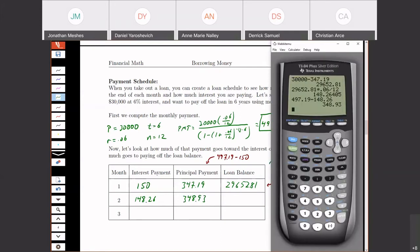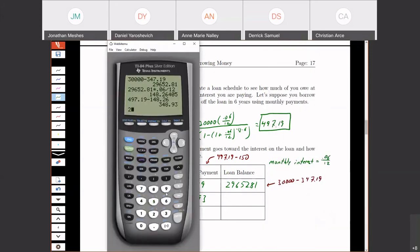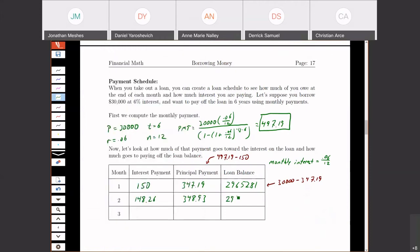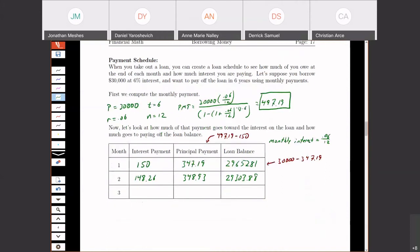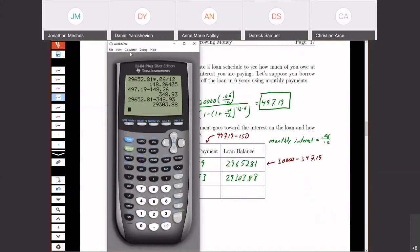So then my loan balance, I'm going to take my previous loan balance, $29,652.81, and subtract the amount of principal that I'm paying off this month, the $348.93. So we get $29,303.88. And just to make sure that we all got it, right, we'll do one last one.